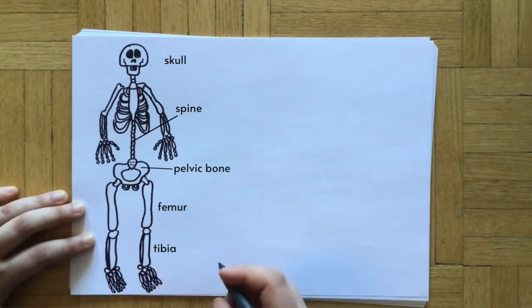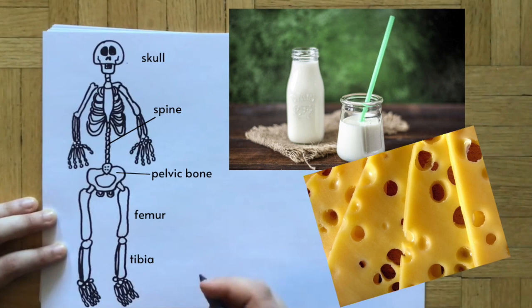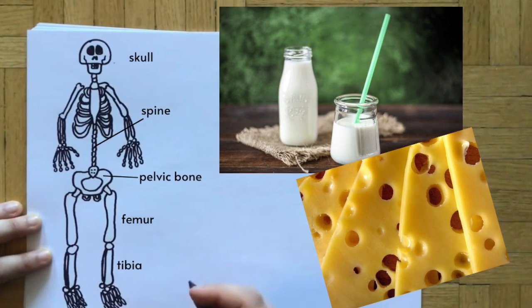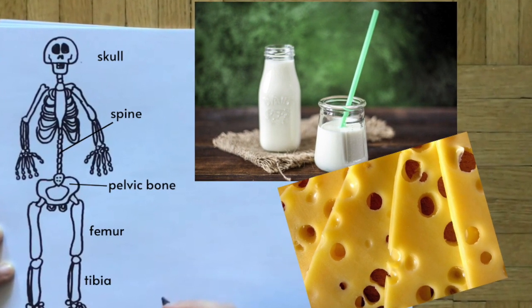So as I said before, bones are made of calcium, and one of the best ways to keep your bones nice and strong is to get calcium from your food. You can get this from milk products such as yogurt and cheese, and of course milk.